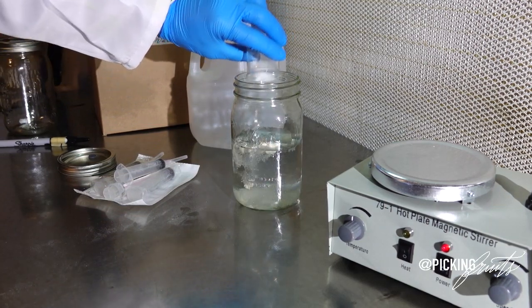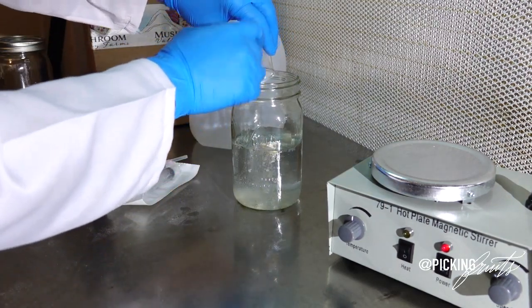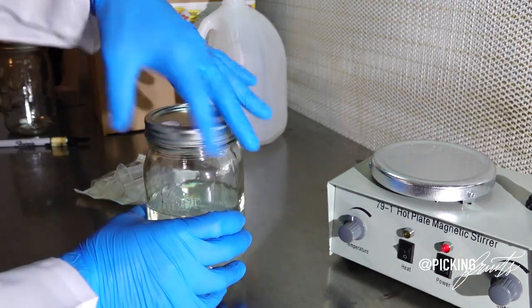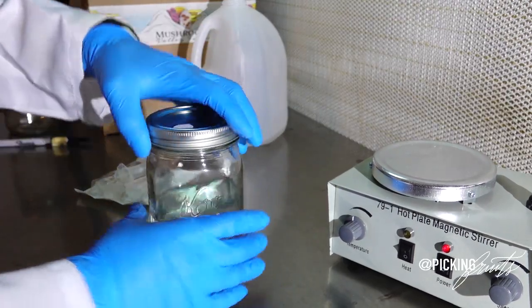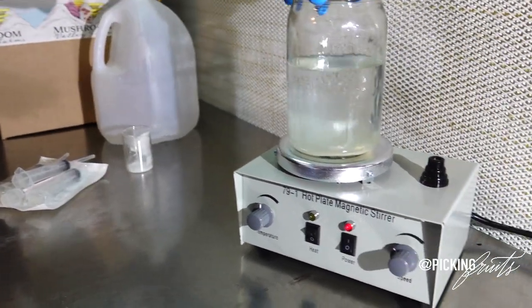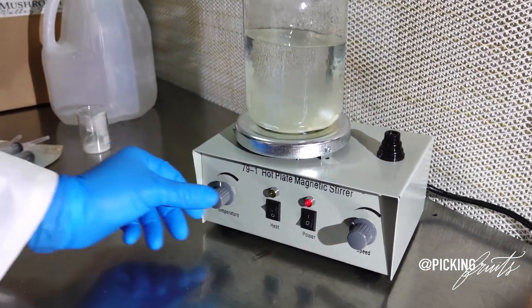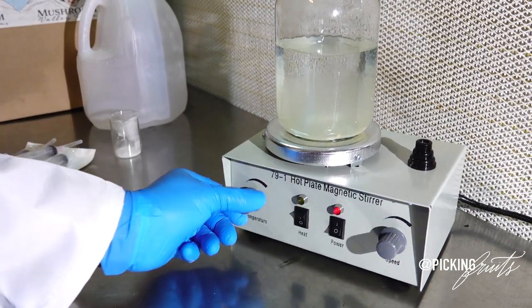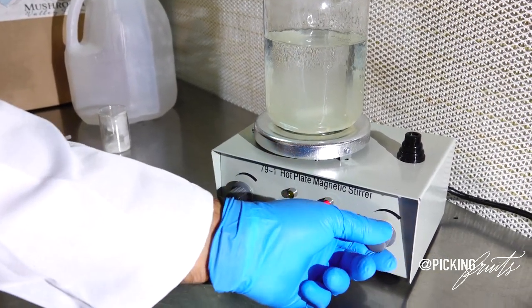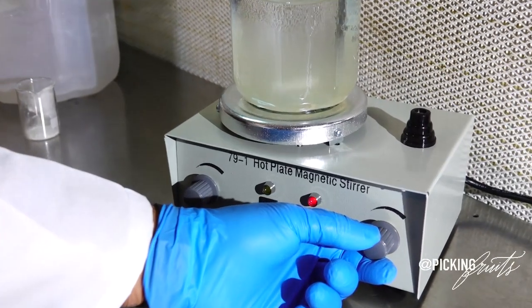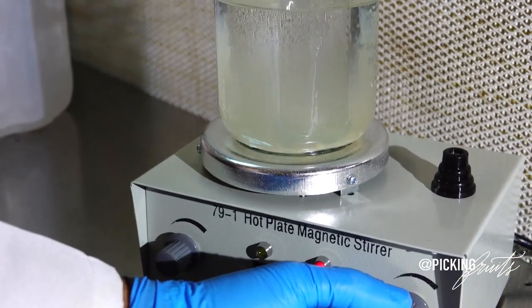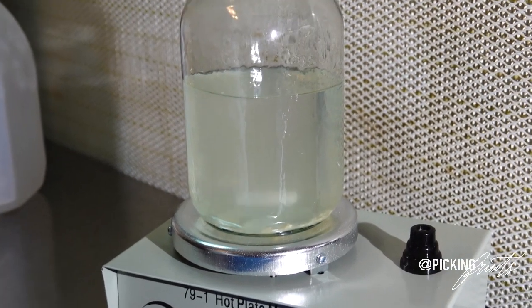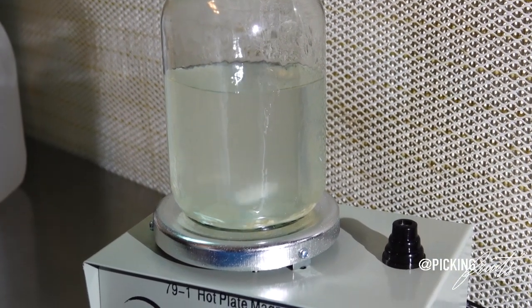So now I'm going to be adding my nutrients. And I'm going to seal these up. And I'm going to be placing them on the stir plate. So we don't need any kind of heat right now. And we're slowly going to increase our RPMs until our stir bar has thoroughly mixed all of the nutrients inside of the liquid.